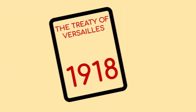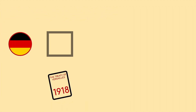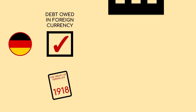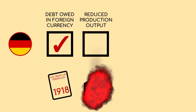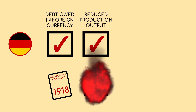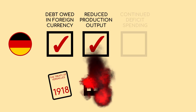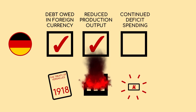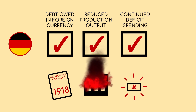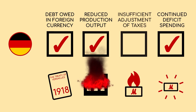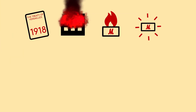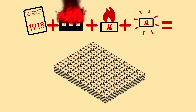So we can see that the reparations imposed on Weimar Germany meet the criteria of debt owed in a foreign currency. The aftermath of war reduced their production output, and the seizure of the Ruhr Valley compounded this impact. The government continued to deficit spend despite these handicaps, and also didn't adjust taxes to compensate. All of these factors combined to create hyperinflation.